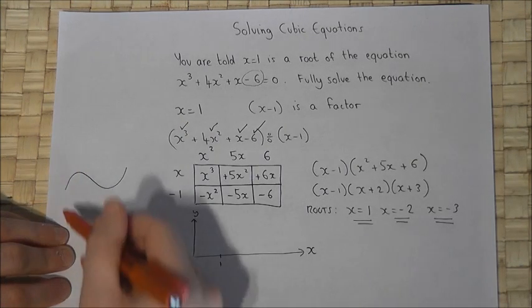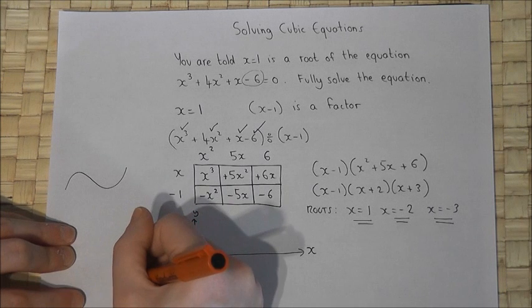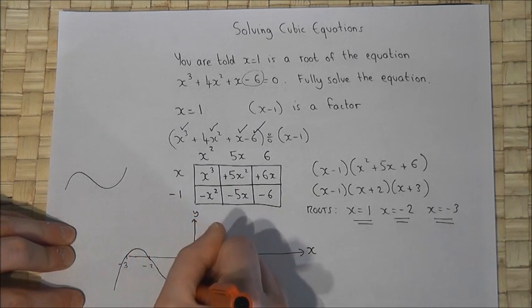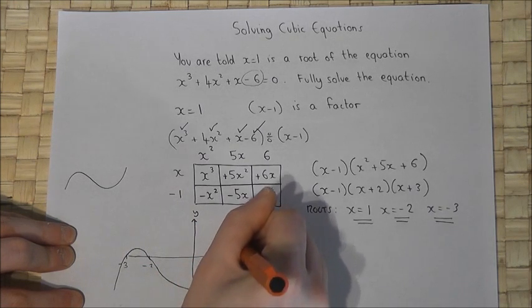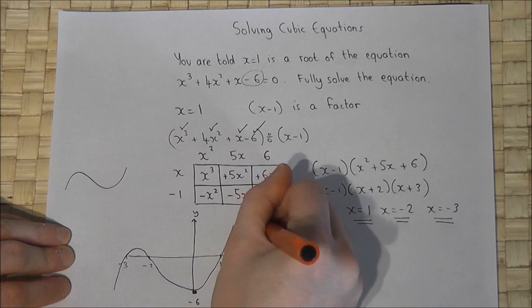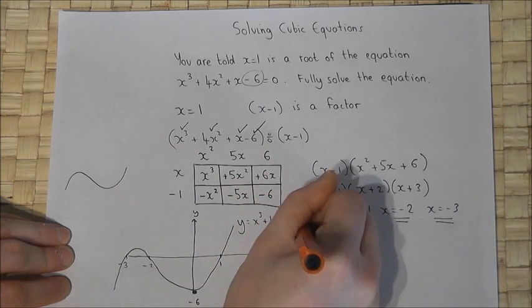It's a positive cubic, so the graph will look something like this. My challenge is to fit the graph like that to the points given. So it comes up, down, up. Again, only a sketch. But this is a sketch of y equals x cubed plus 4x squared plus x take away 6.